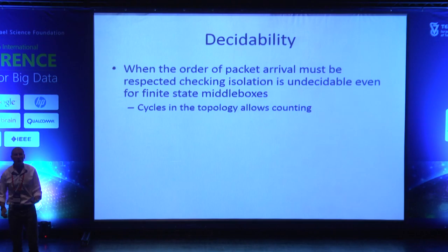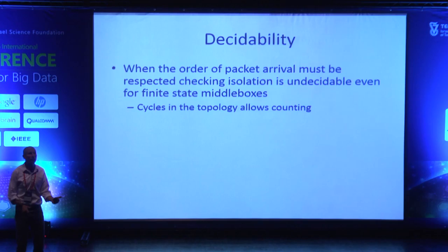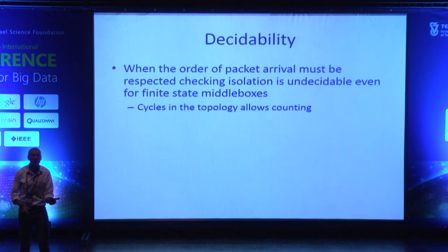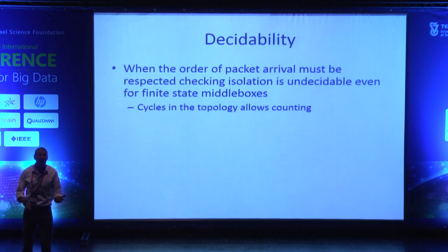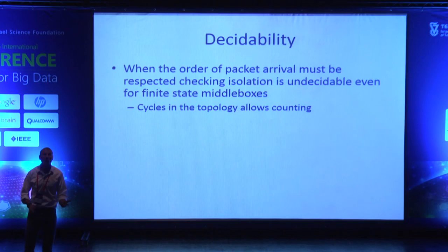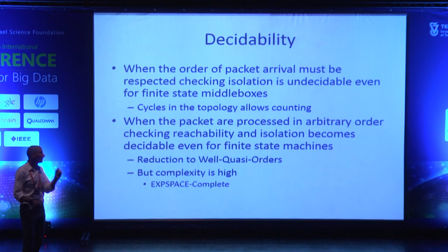We show some non-trivial decidability results. Even with finite states and a fixed topology, the problem of checking isolation in the presence of middle boxes is undecidable. The reason is that even with finite states, you can have unbounded histories, and since the network topology is cyclic and undirected, you can send messages back and forth between middle boxes to emulate counting. So checking isolation is undecidable in finite-state middle boxes in general.